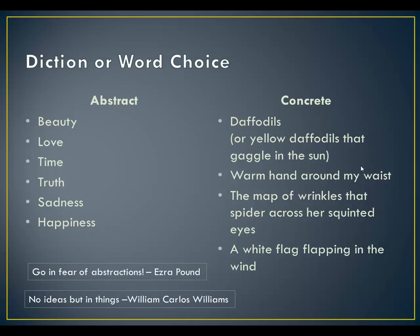There are two different types of words people use in poetry. Diction is the conscious choice you make as to which words you will use in your poem. Abstract words are words like beauty, love, time, truth, sadness, and happiness. These are universal — we all experience beauty, but beauty is different to you than it is to me; we all have a different perception of what beauty is. Ironically, the more specific someone is when they write about beauty, the more universal it becomes for those reading the image.